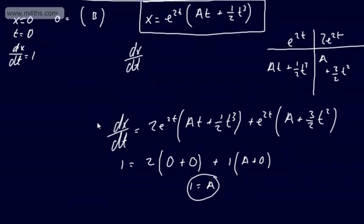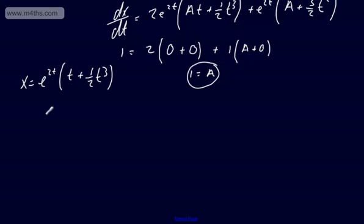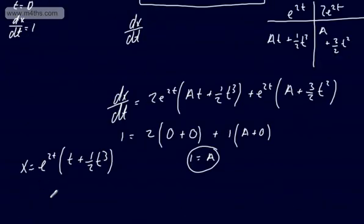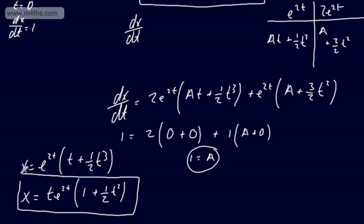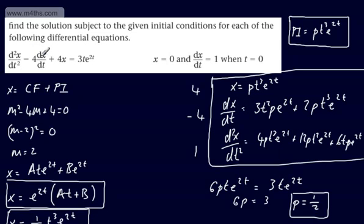Therefore, with a = 1 and b = 0, the specific solution is x = e^(2t)(t + (1/2)t³), which we can also write as x = te^(2t)(1 + (1/2)t²). That right there is the specific solution to the differential equation d²x/dt² − 4(dx/dt) + 4x = 3te^(2t), with x = 0 and dx/dt = 1 at t = 0.